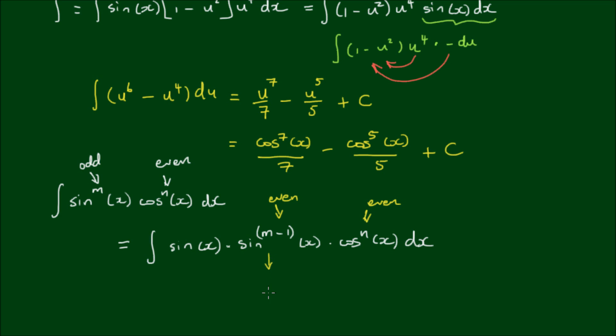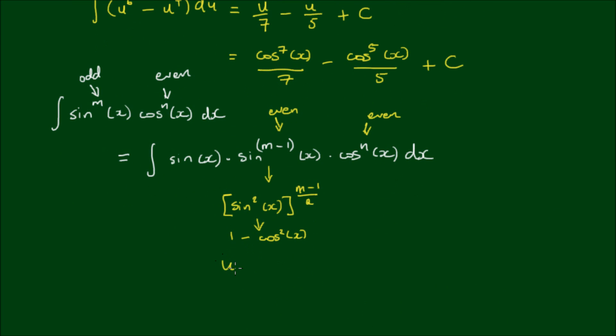The sine of the m-th power can be rewritten as sin(x)[sin²(x)]^((m-1)/2), and then rewrite this as [1-cos²(x)], and then simply use the substitution u equals cos(x) and follow the same steps that I've just taken above. And you should be able to turn this integral into a simple power integral.